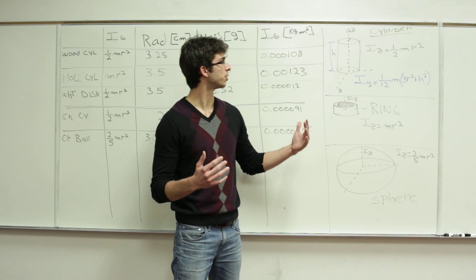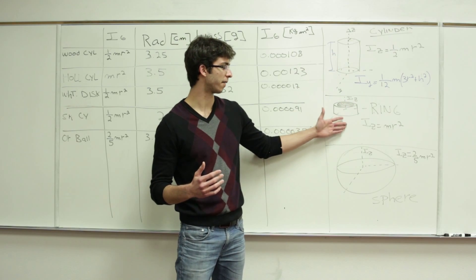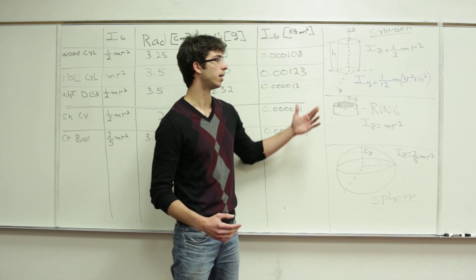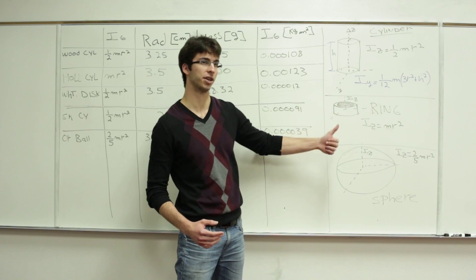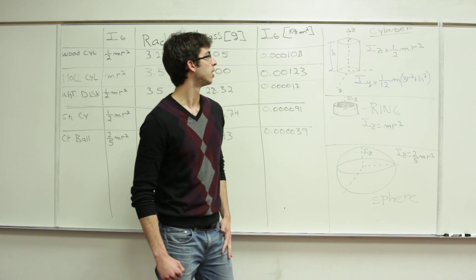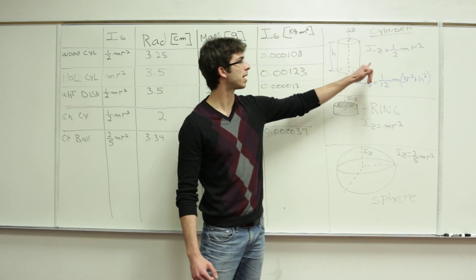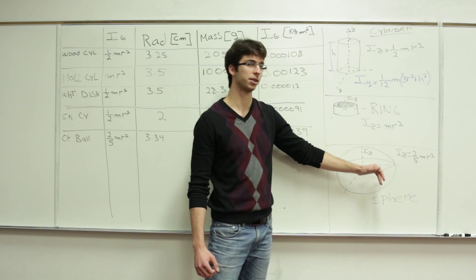So for our experiment, we choose three different objects: a cylinder, a ring and a sphere. Each one of those having a different moment of inertia on the z-axis, which is the vertical axis in this case. The equation for moment of inertia is just a relationship between the mass of the object and the radius and some coefficient that varies depending on the shape.